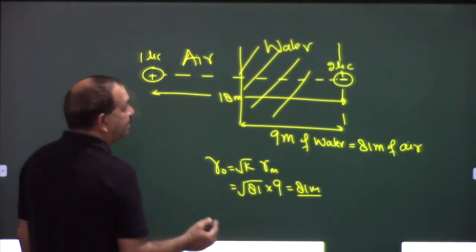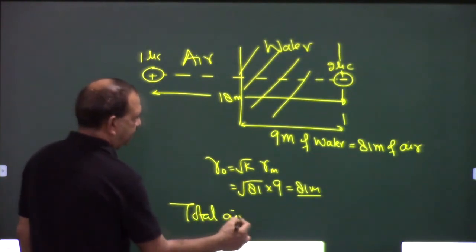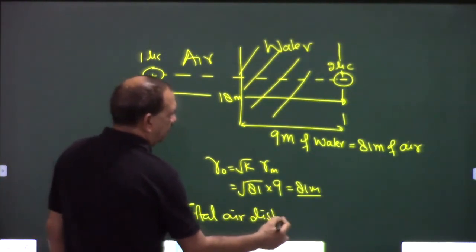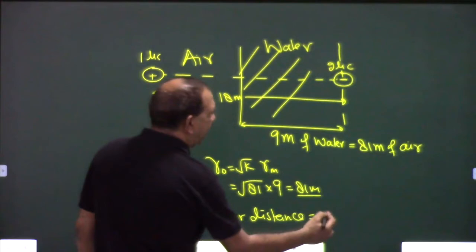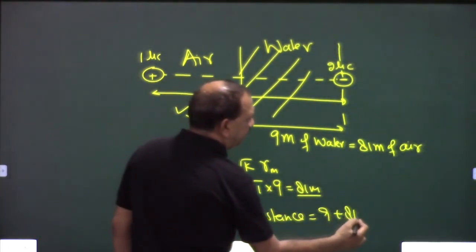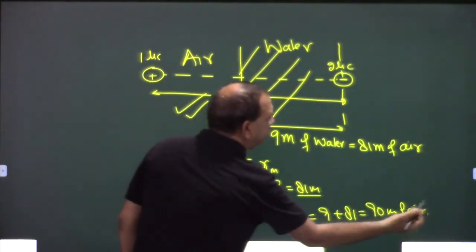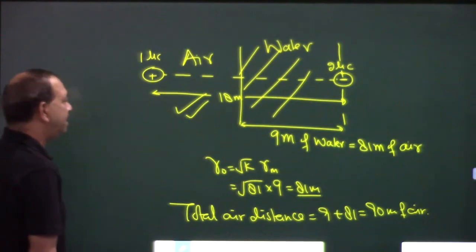This question mean total air distance - 9 of air tha hi tha plus 81, that is 90 meter of air. Or ab 90 meter of air leke aap calculate kar doge.